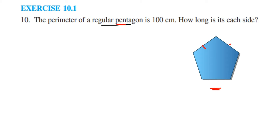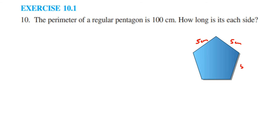Counting the sides: 1, 2, 3, 4, 5 — so it is a pentagon. Now what is the meaning of 'regular pentagon'? A regular pentagon means a polygon where all sides are of equal measurement. Like, all side lengths will be the same. Suppose one side is 5 centimeters, then all sides will be 5 centimeters. That is the meaning of 'regular'.